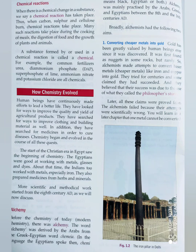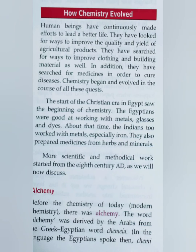Let's see how chemistry evolved. Human beings have continuously made efforts to lead a better life. They have looked for ways to improve the quality and yield of agricultural products and to improve clothing and building materials as well. Chemistry began to evolve in all these aspects. The start of the Christian era in Egypt is the beginning of chemistry — that is when alchemy began.